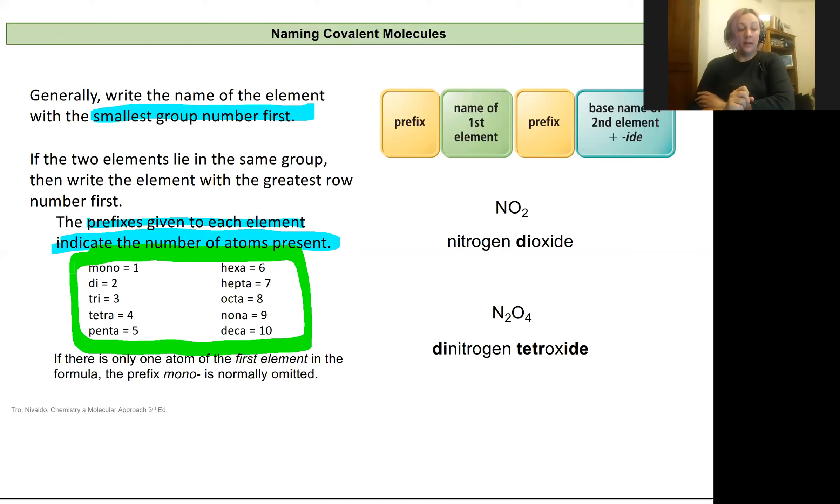If there's only one atom and it's the first element, we would typically say mono then the element. But we usually omit that because if we're saying the name, it's implied that there's at least one. But we only do this for the first one. An example would be carbon and oxygen bonded together. This would be mono carbon mono oxide. We omit the mono on the first one only, so we get carbon monoxide where we keep the mono for the second one.